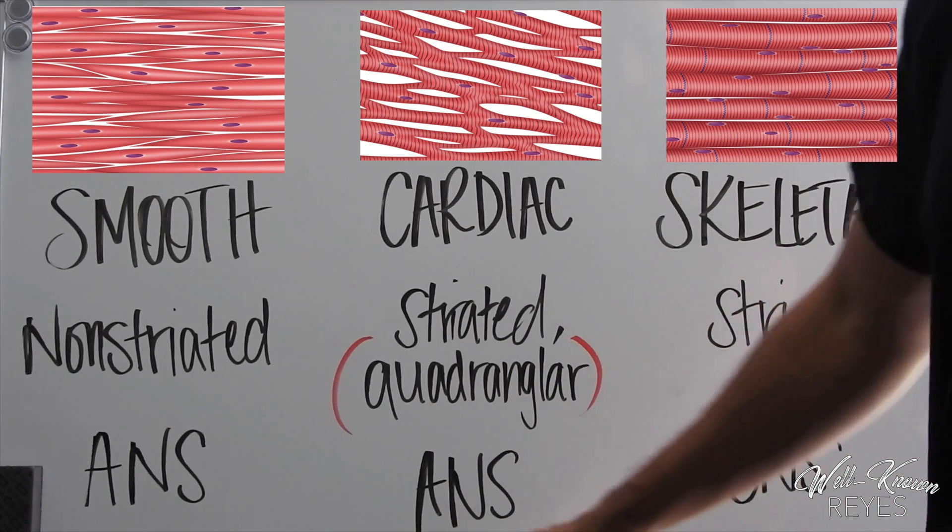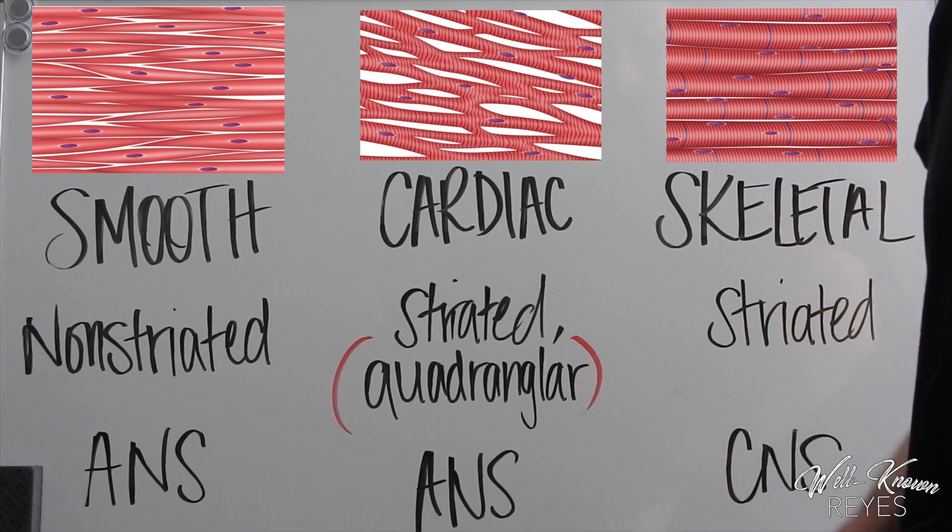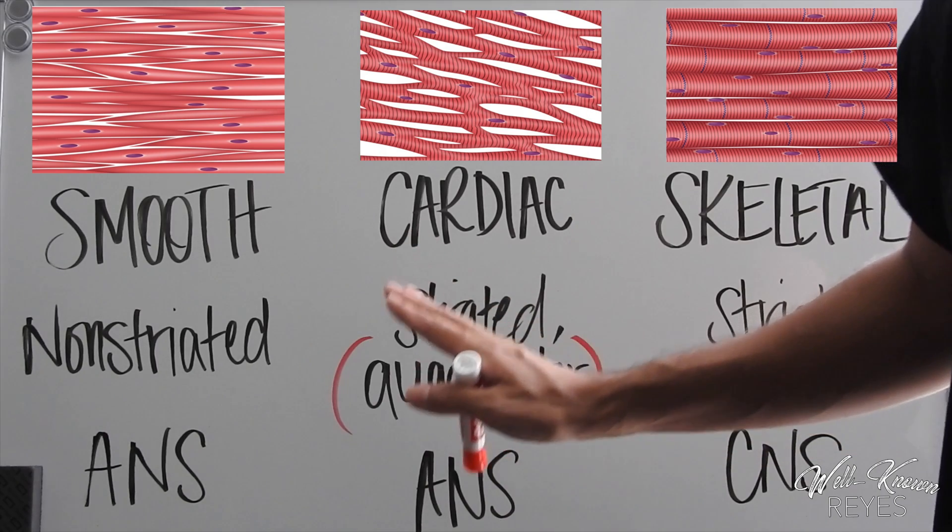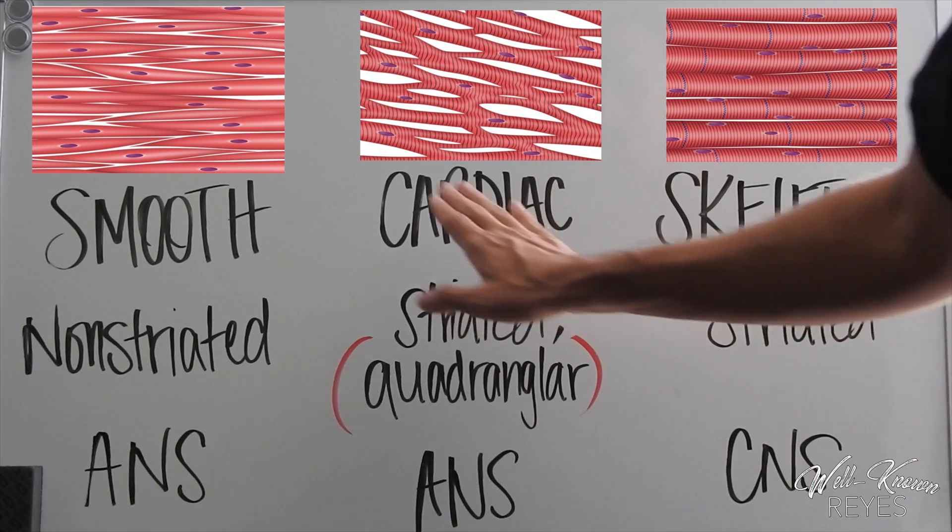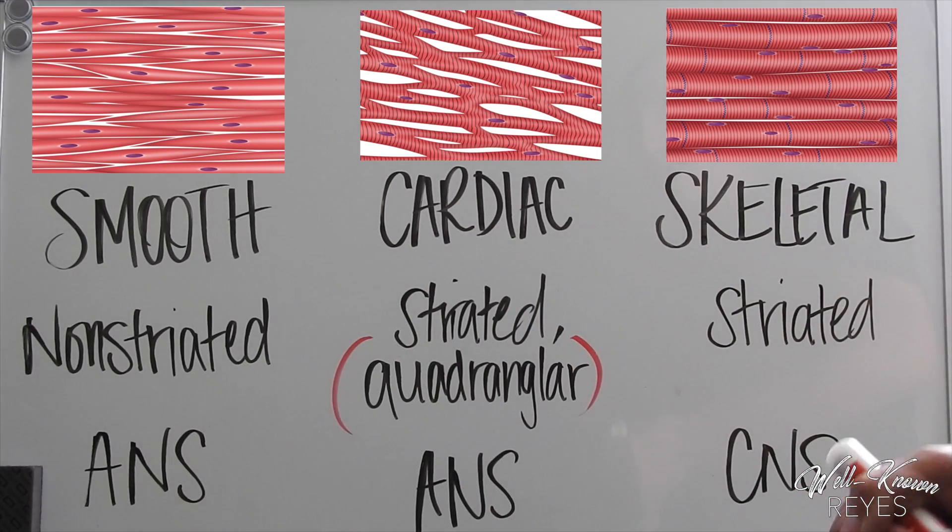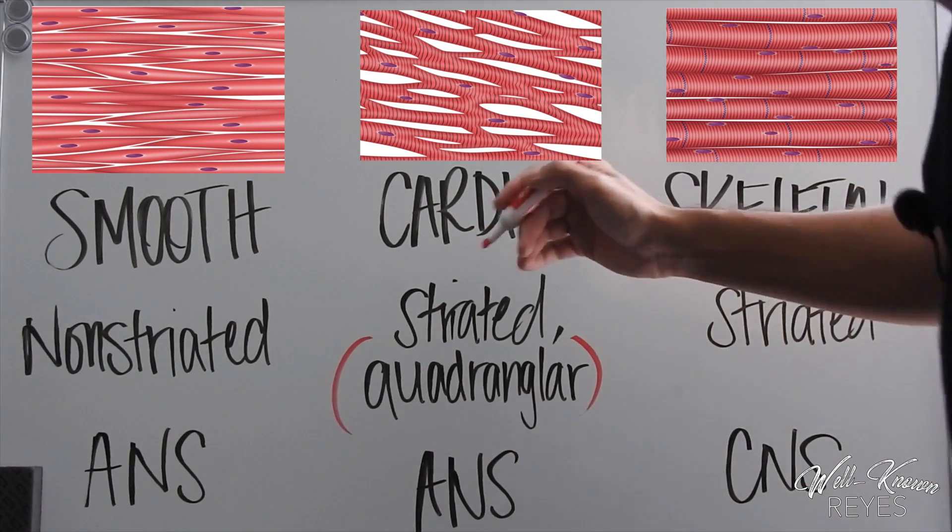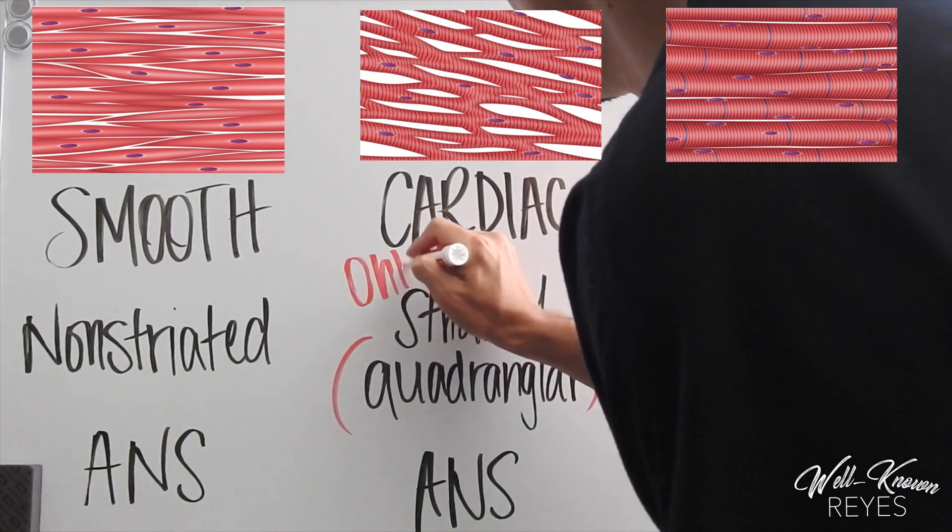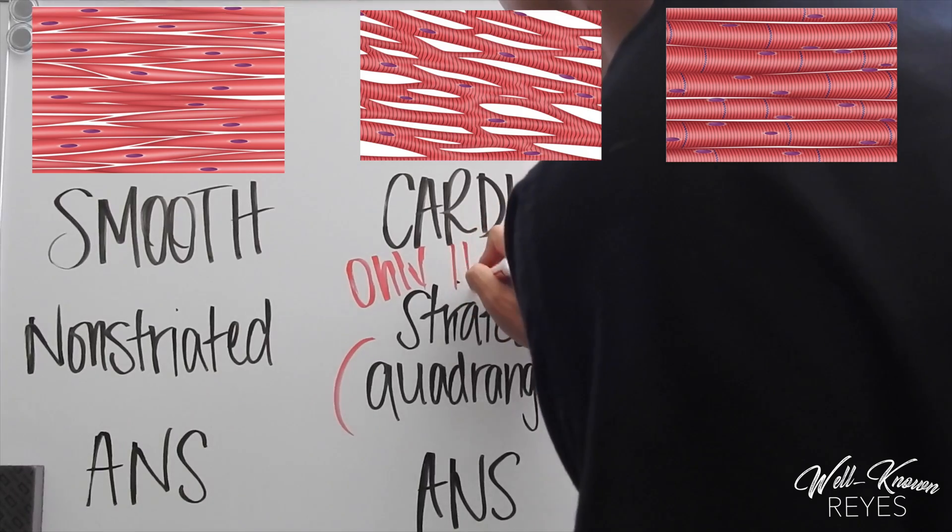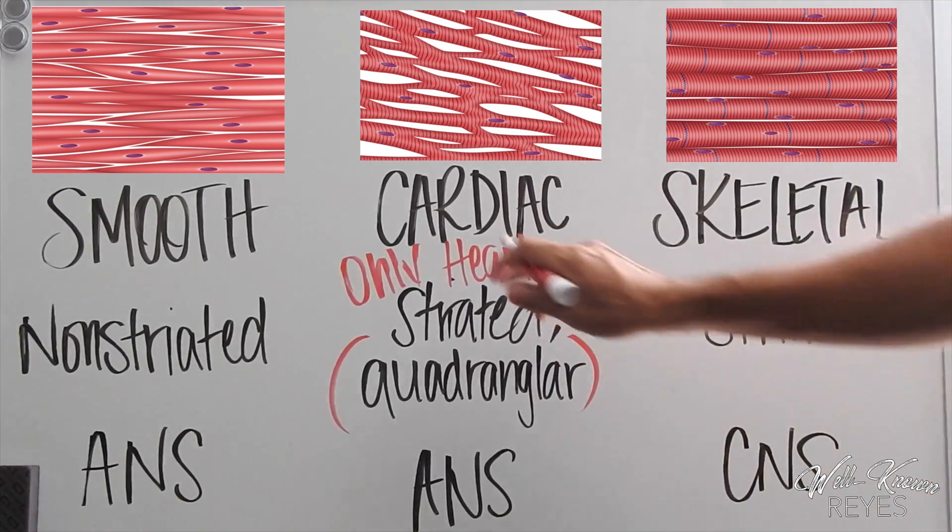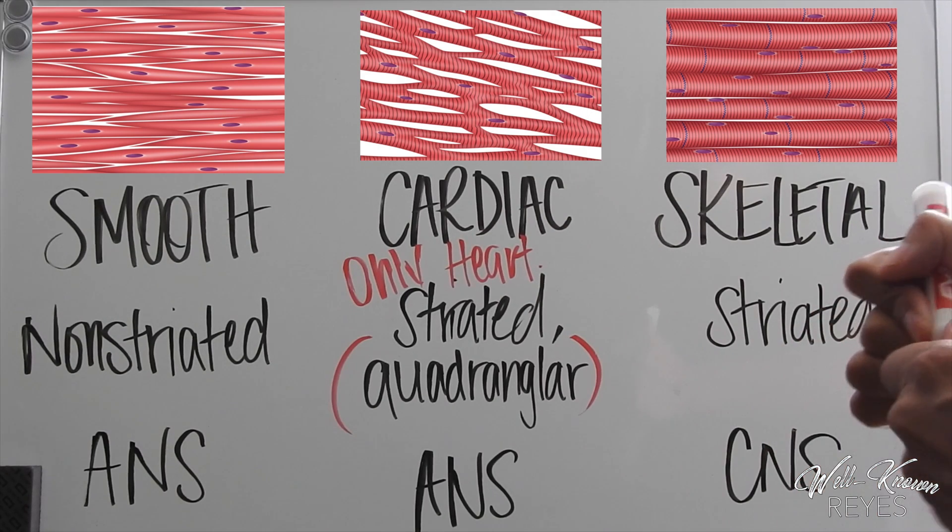It is controlled by our ANS as well, our autonomic nervous system. Autonomic means automatic, so we don't have to tell our heart to pump—it does it by itself. We also want to make sure we know that cardiac muscle is only found in the heart.